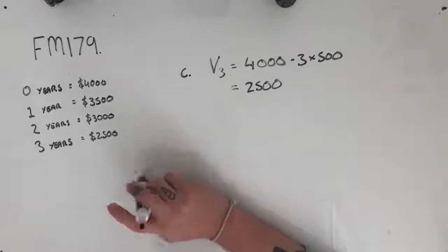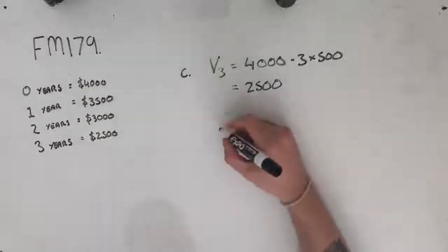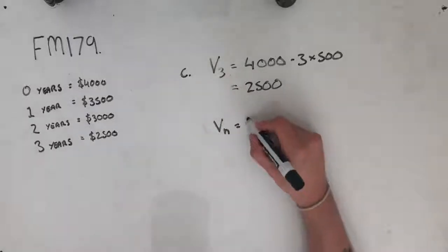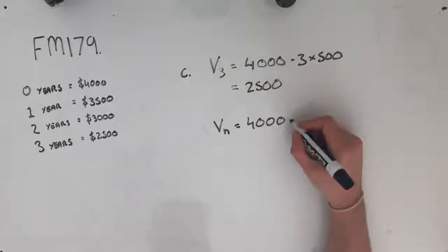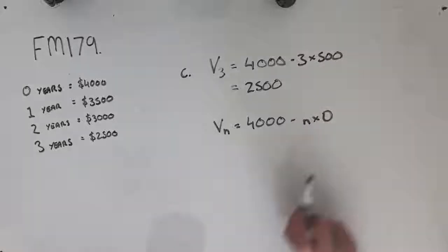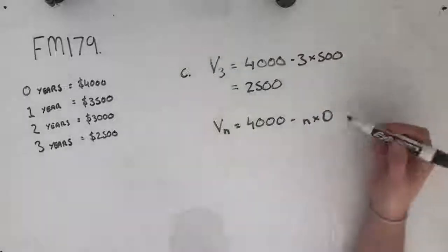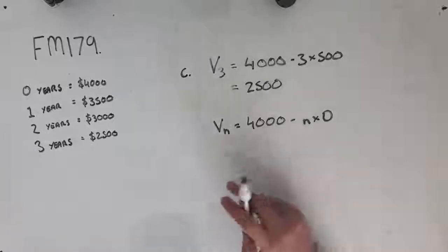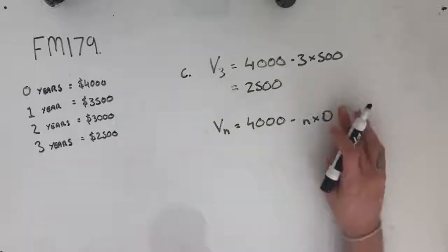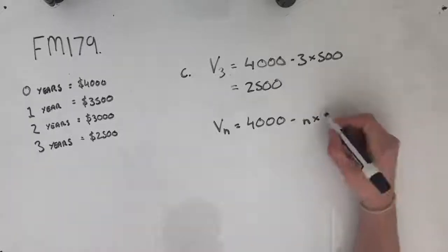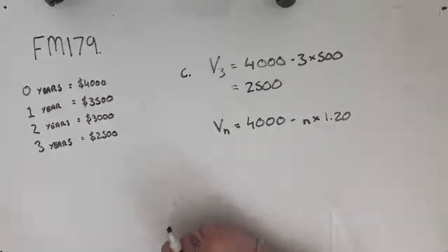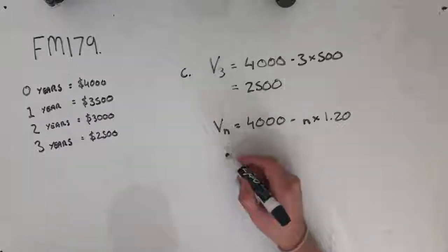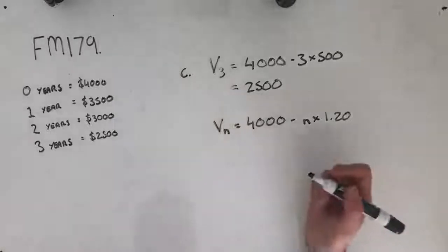And they've told us that using the unit cost method of depreciation it will also be $2,500. To give you a bare bones formula that we use for our unit cost depreciation, it looks very similar to the flat rate nth rule that we used before. The key difference here is that n is no longer going to represent the number of years that has passed and d is no longer going to be 500. n is now going to represent the number of hours that we've used the chainsaw for and d is now going to be $1.20 because we've been told that it depreciates at a value of $1.20 per hour used.